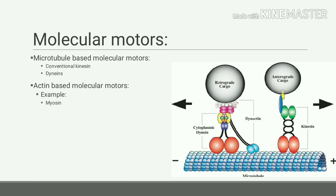Actin-based molecular motors are also a superfamily of molecular motors that produce motion along the actin filaments, and the example is myosin.